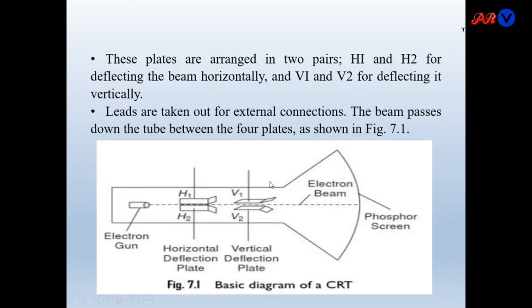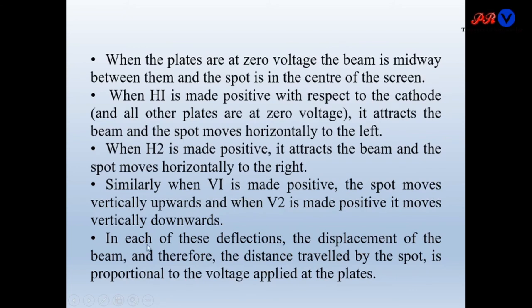Similarly, when V1 is made positive — V1 being on the upper side of the tube — it will move the beam in the upward direction. When V2 is positive, it will move the beam in the downward direction. In each of these deflections, the displacement of the beam, and therefore the distance moved by the spot, is proportional to the applied voltage at the plates. So the movement on the screen will depend upon the voltage applied at the plates.